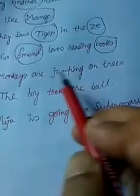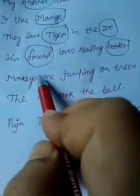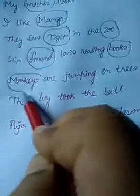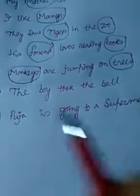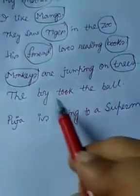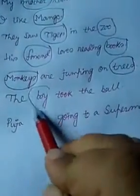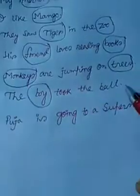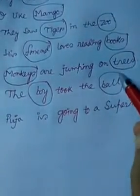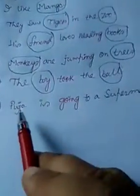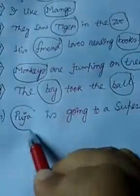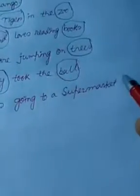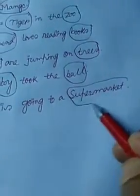F. Monkeys are jumping on trees. Monkeys and trees are the nouns. G. The boy took the ball. Boy and ball are the nouns. H. Pooja is going to a supermarket. Pooja and supermarket are the nouns.